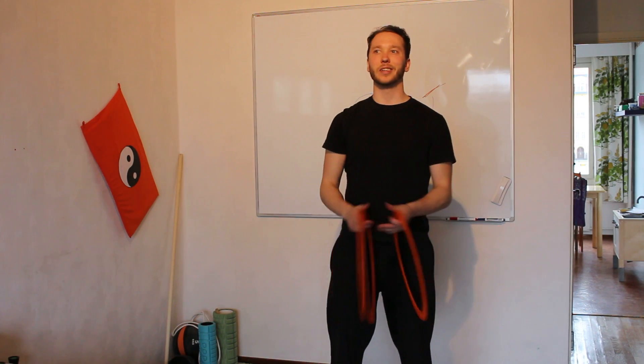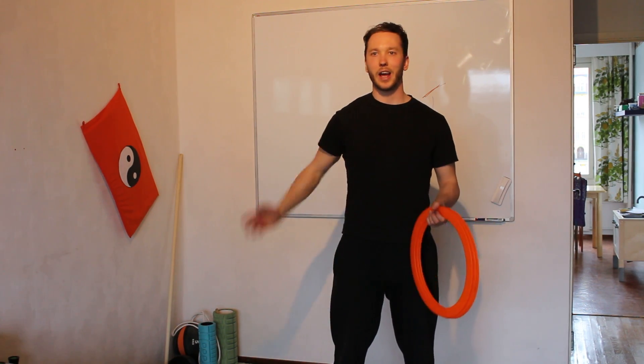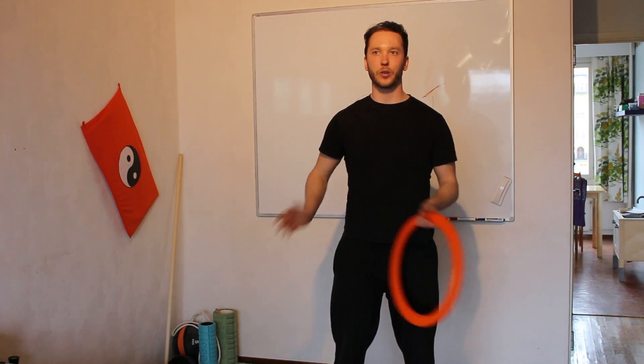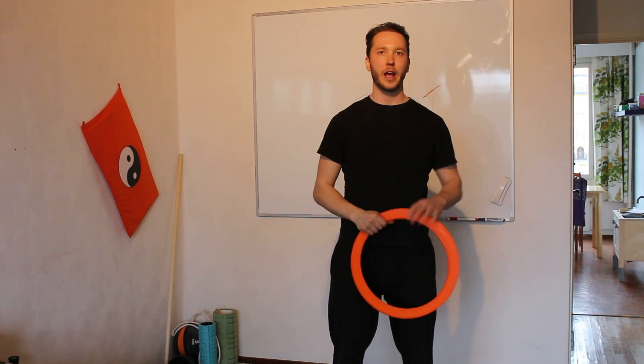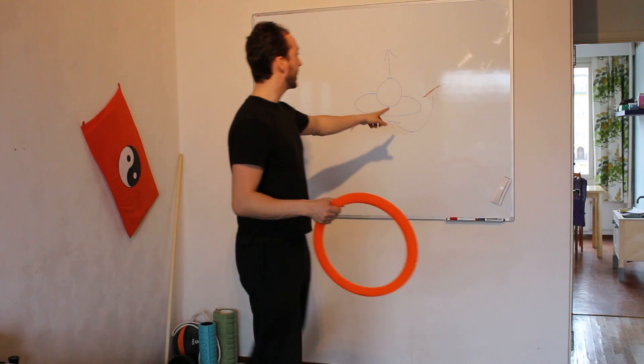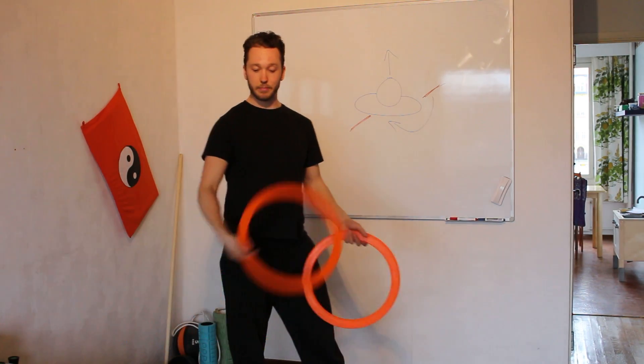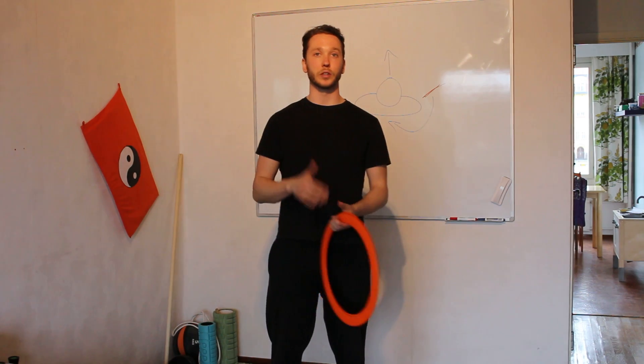So when you start with three, it's the same as the other. First you do with one hand, then with the other, then you go one, two, one, two, three, one, two, three, four, and just build up. But the two biggest ones are the angle thing and you make it spin.